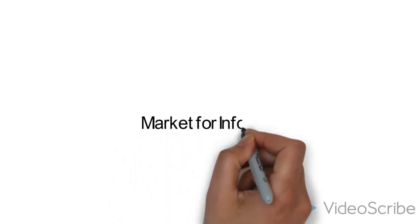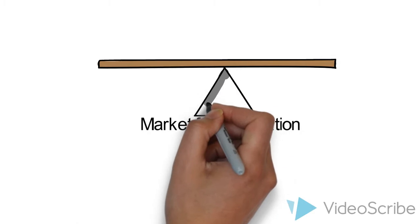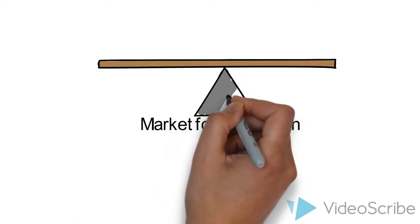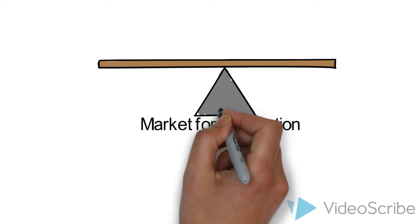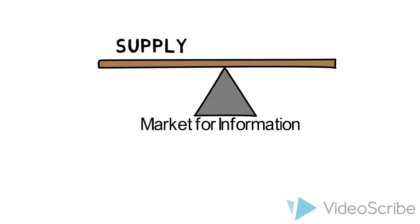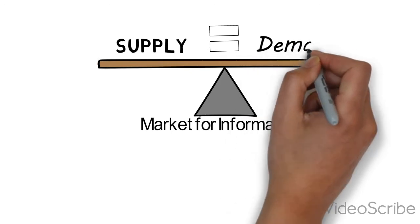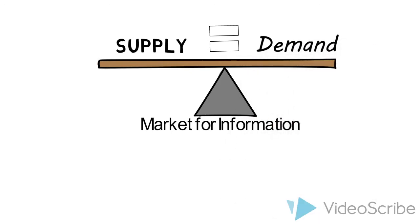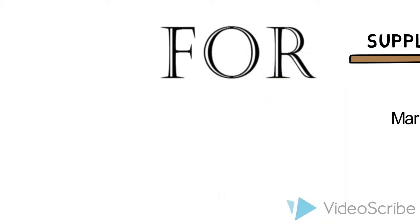There are two fundamental theories that can be used to answer whether we need accounting regulation or not. Adam Smith's invisible hand tells us that we can rely on the market to determine the optimal provision of any good or service. Accounting disclosure can be thought of just like bread or milk — the market will pay for the accounting information that they want. The benefit of a market-based solution is that information will only be generated if someone is willing to pay for it, leading to the right amount of information, at least if the market is efficient.